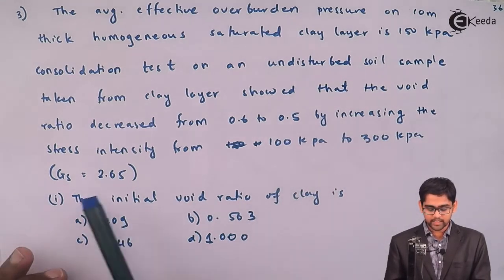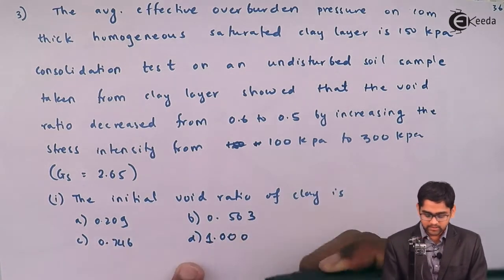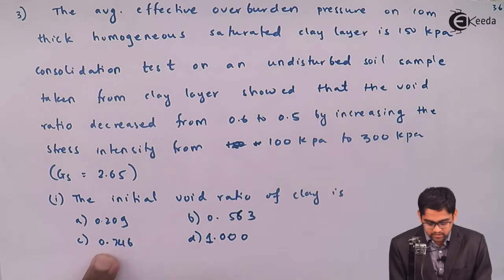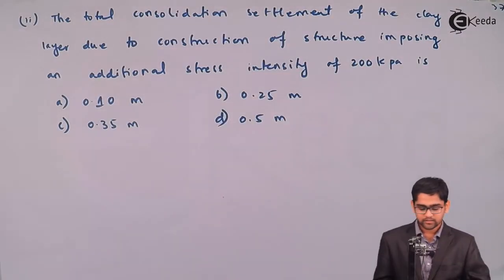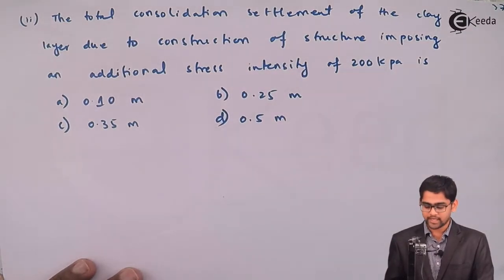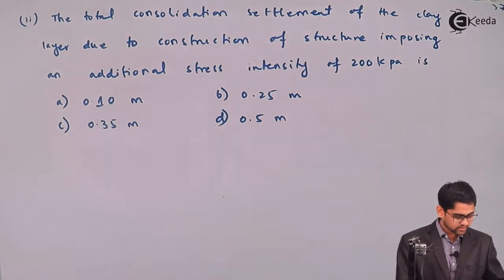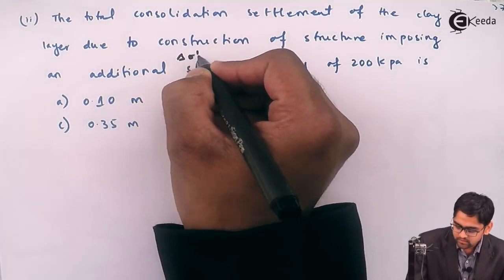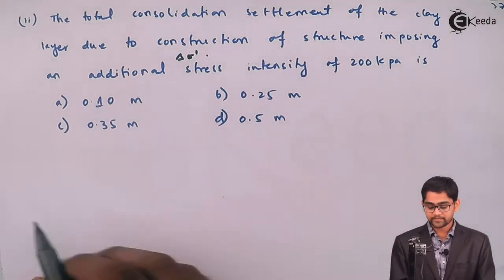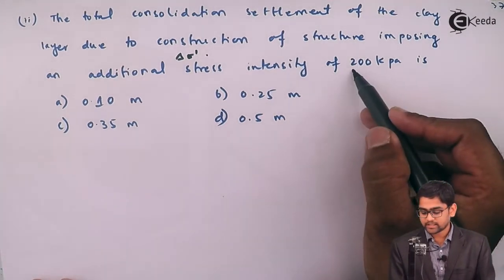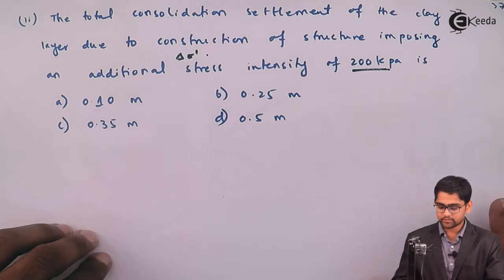The first part asks for the initial void ratio of the clay sample in the field, with options 0.209, 0.563, and 0.746 — the answer is option one. In the second part, we are asked to evaluate the total consolidation settlement of the clay because of the construction of a structure imposing an additional stress, delta sigma dash, equal to 200 kPa.